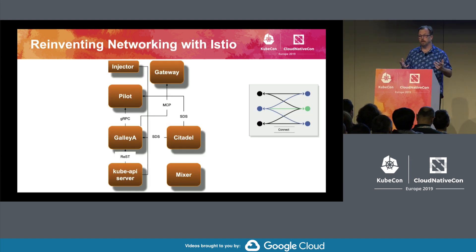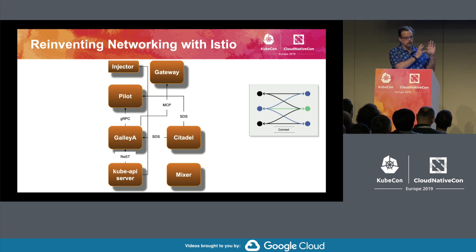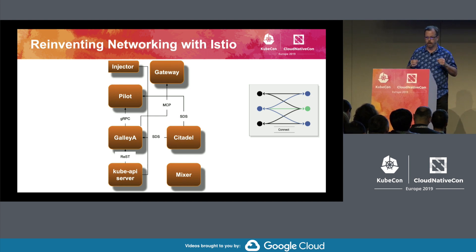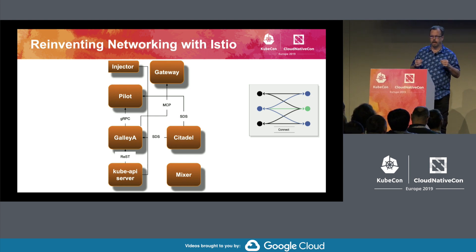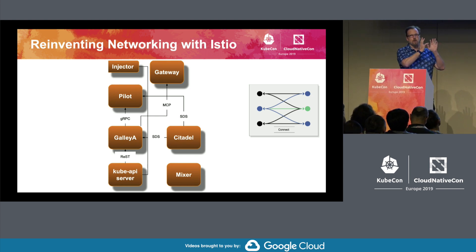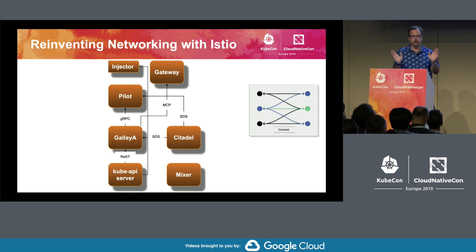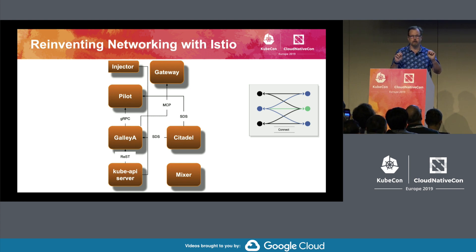Let's talk about the reinvention of networking with Istio. This is a geek slide — I love geek slides because I'm a geek. This is Istio in one environment. If you have a cluster, this is one Istio — this is what it looks like, these are most of the components. The ability to connect is there, but it's just one cluster. That's a problem — we need multiple clusters.